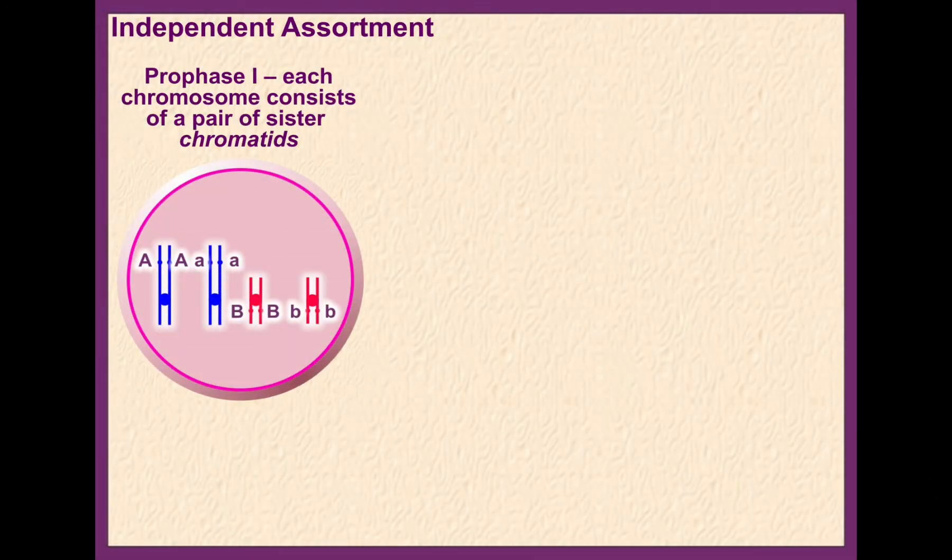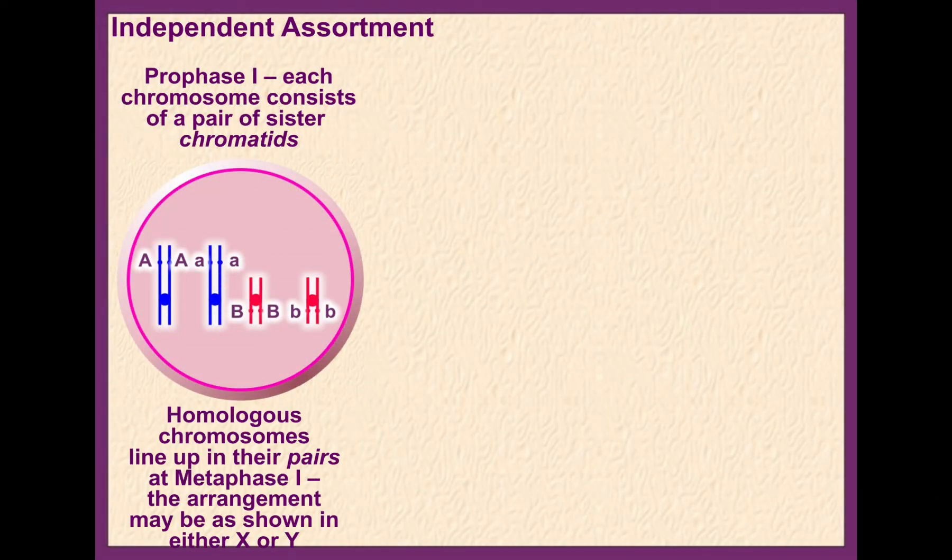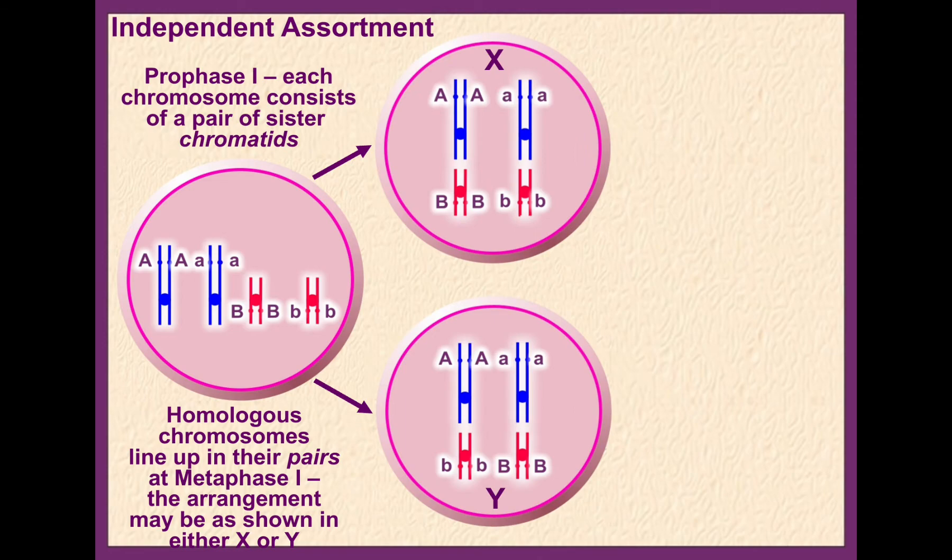We're going to look now at independent assortment in meiosis. In the first prophase, the sister chromatids have formed, DNA has replicated. Homologous chromosomes line up in their pairs in metaphase I, and their arrangement can be as follows.